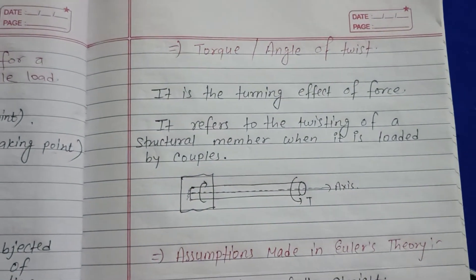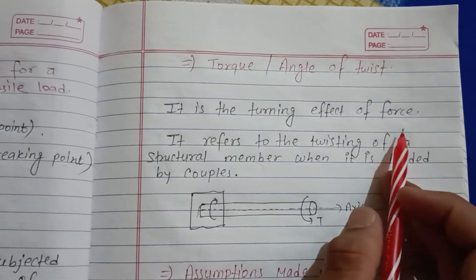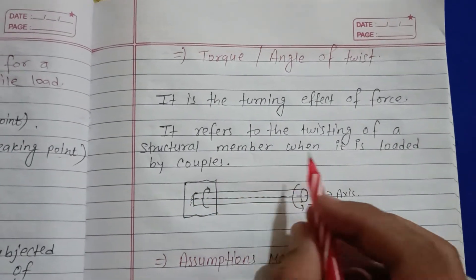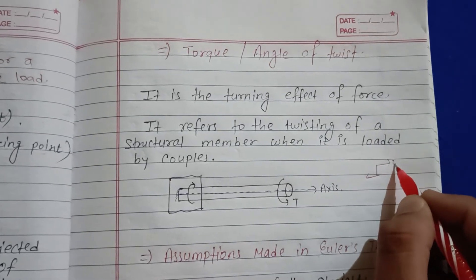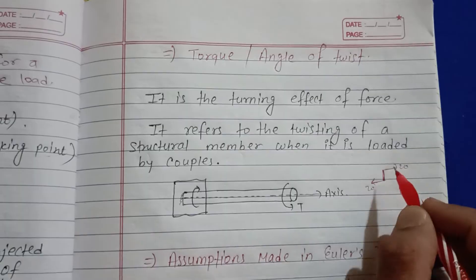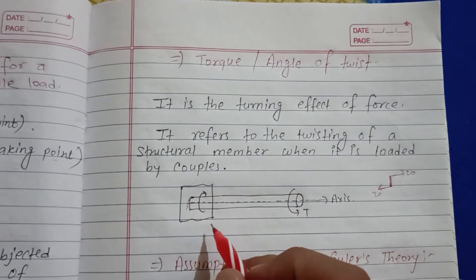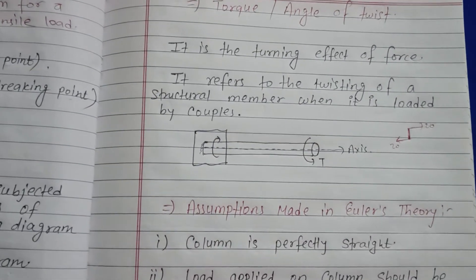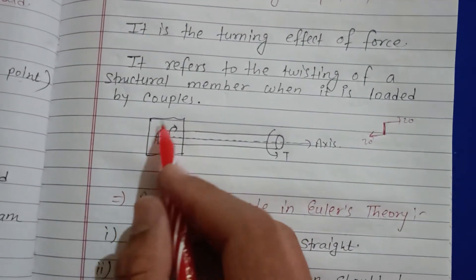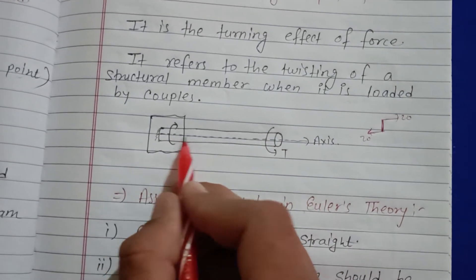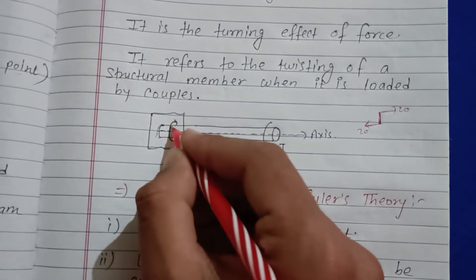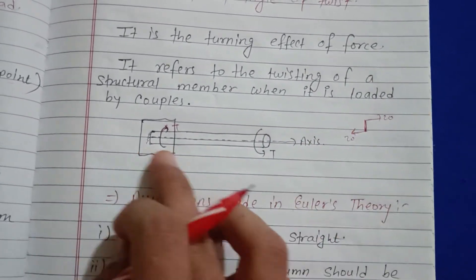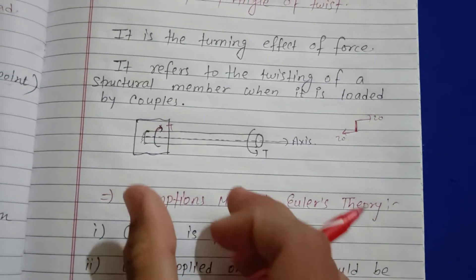Torque and angle of twist: torque is the turning effect of a force, referring to the twisting of a structural member when loaded by a couple. A couple consists of two equal and opposite forces. The angle of twist is the angle through which the member twists under the applied torque.